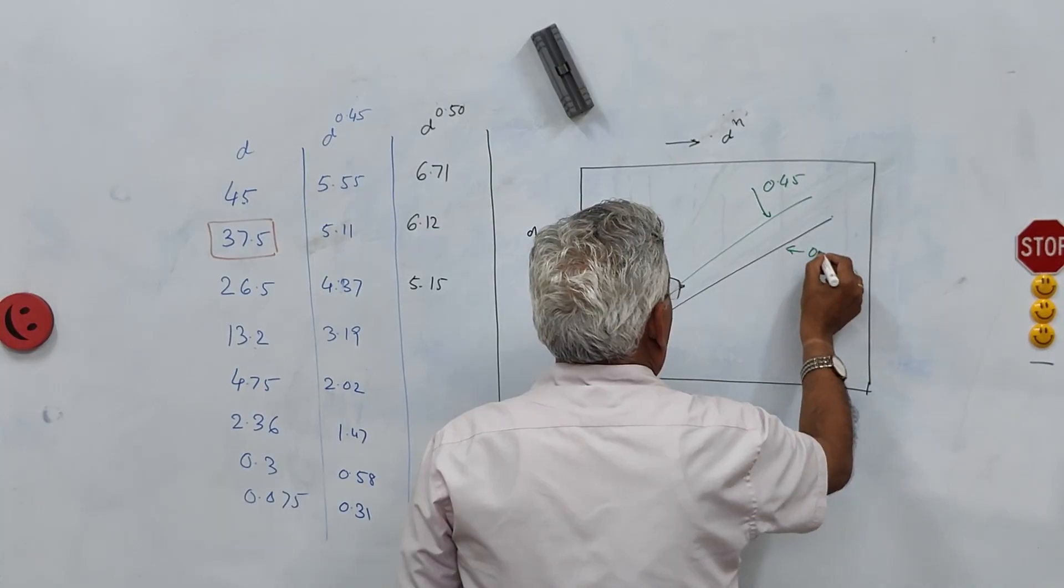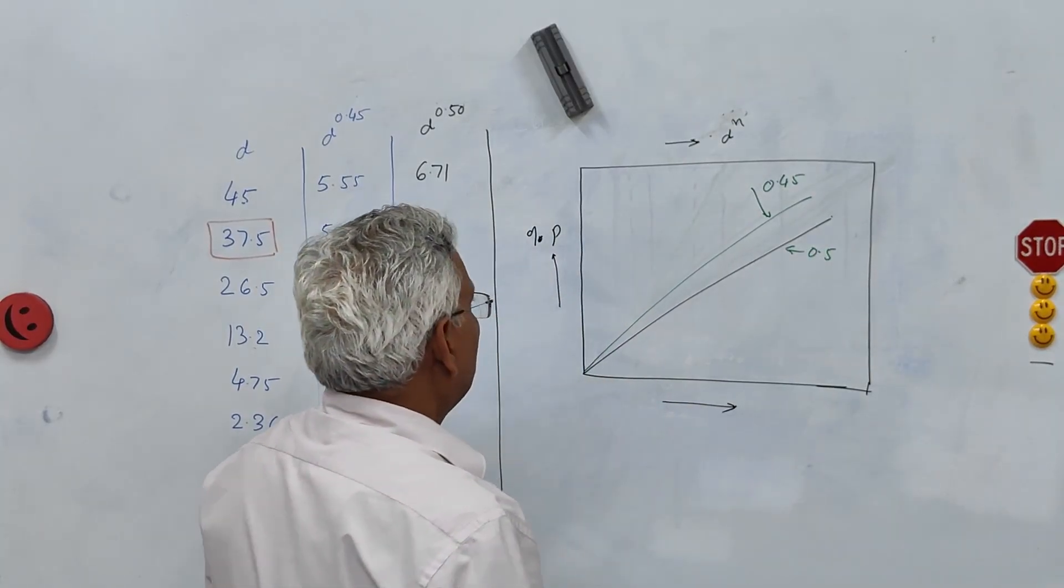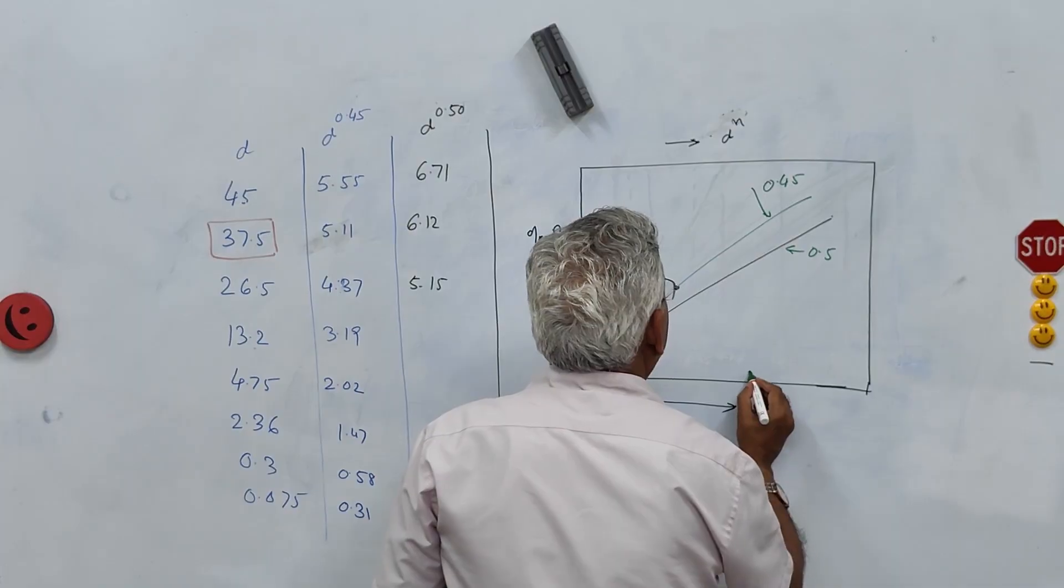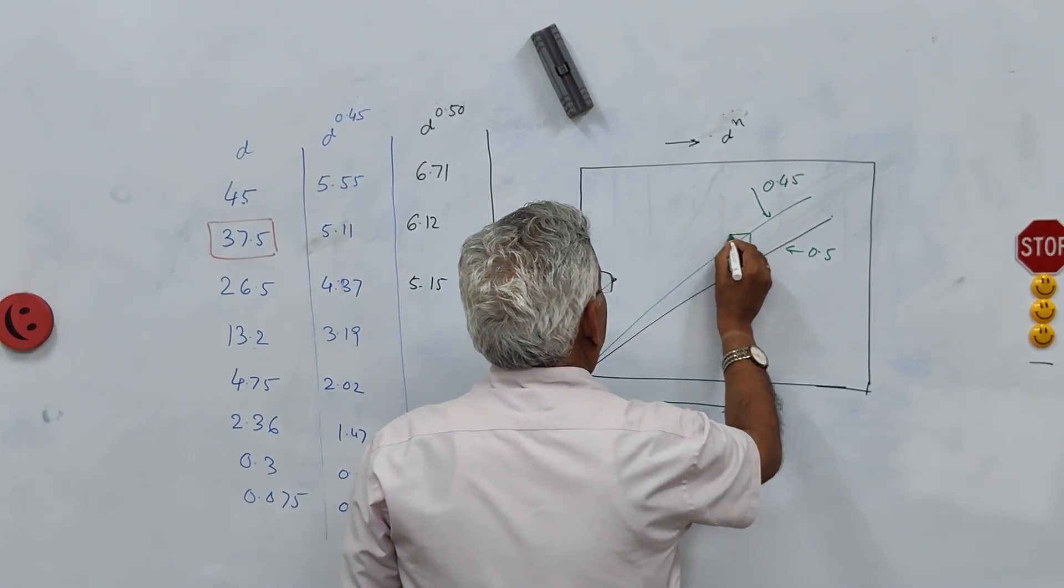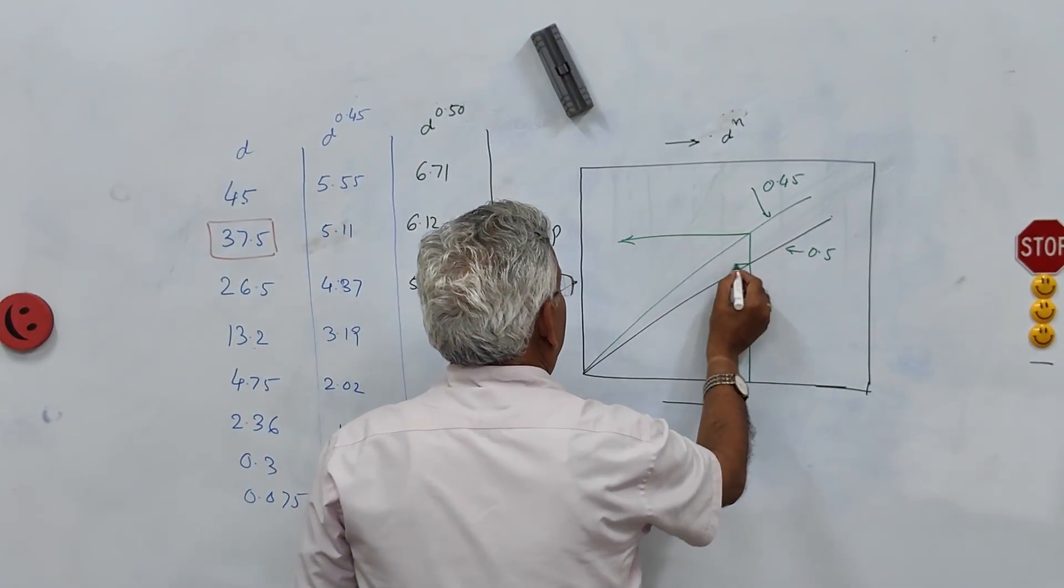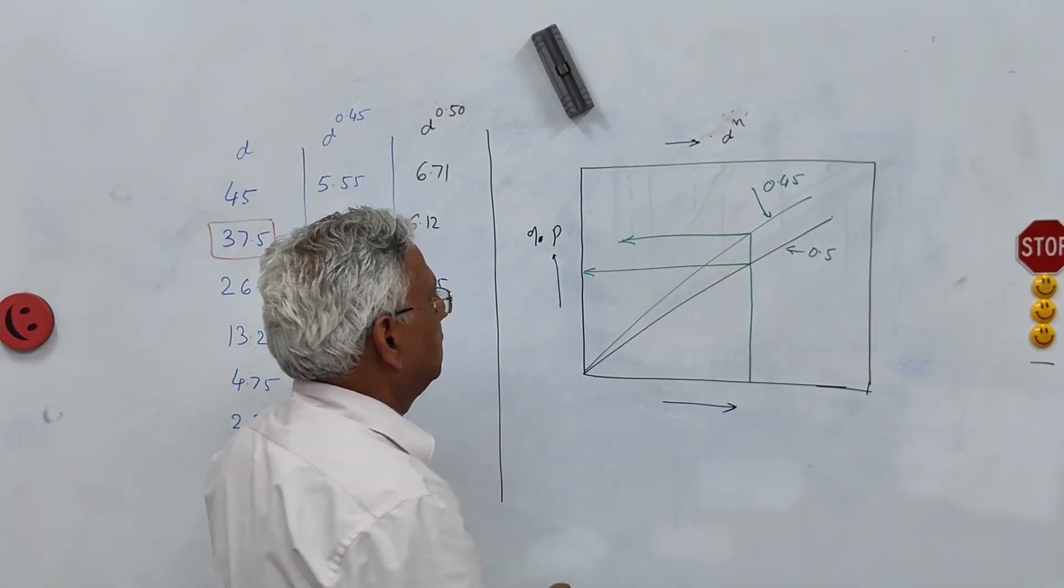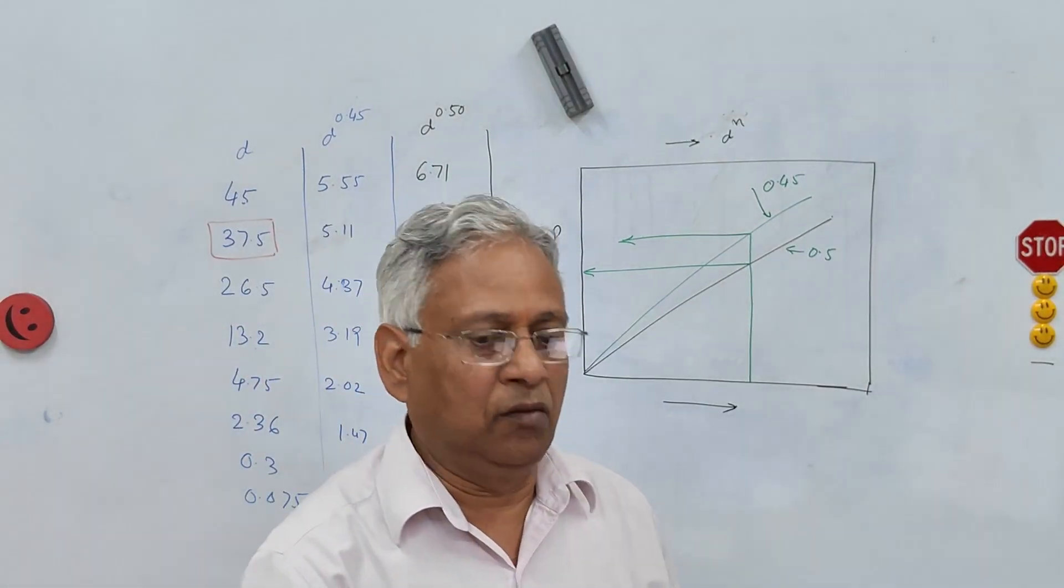This is 0.5 curve. So what basically it says is that for every sieve size you have a higher percent passing, means you have a finer grading now.